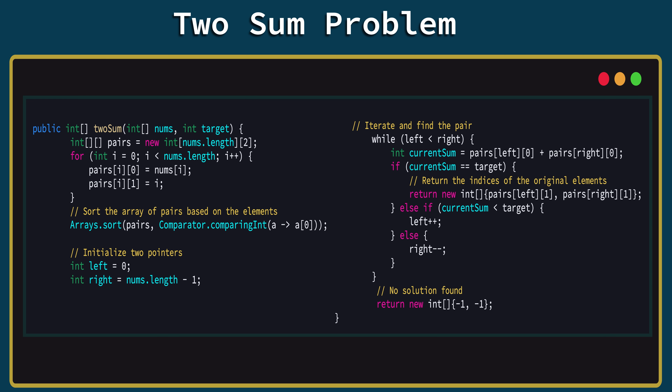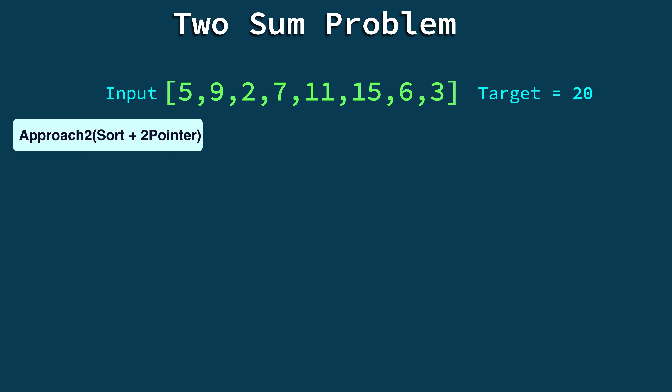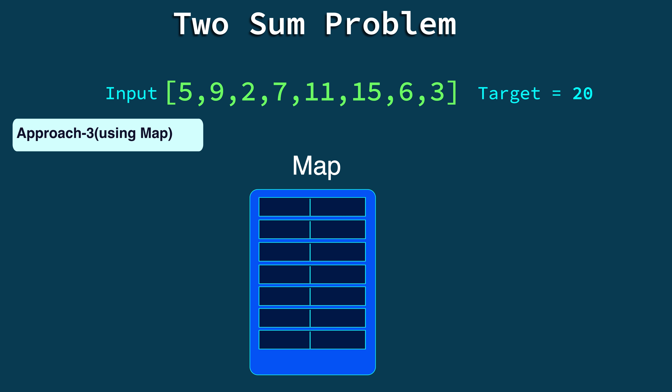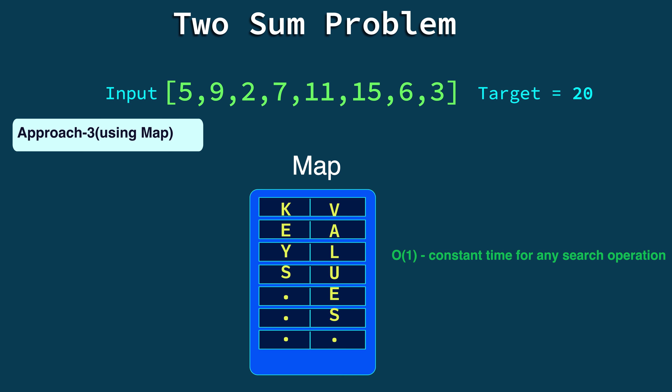Can we optimize the O(n log n) solution to linear O(n)? Yes — by using a Map data structure, available in most programming languages. A Map stores key-value pairs. Its special ability is that it can return a searched element in constant time O(1). For our problem, we store array elements as keys and their indices as values. We then iterate through the array, searching the map for the complement of each element. When we find the right complement as a key, we have our solution — in a single iteration.